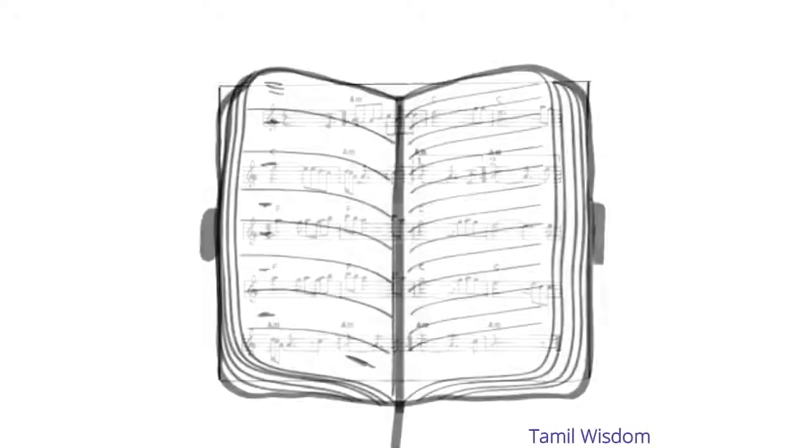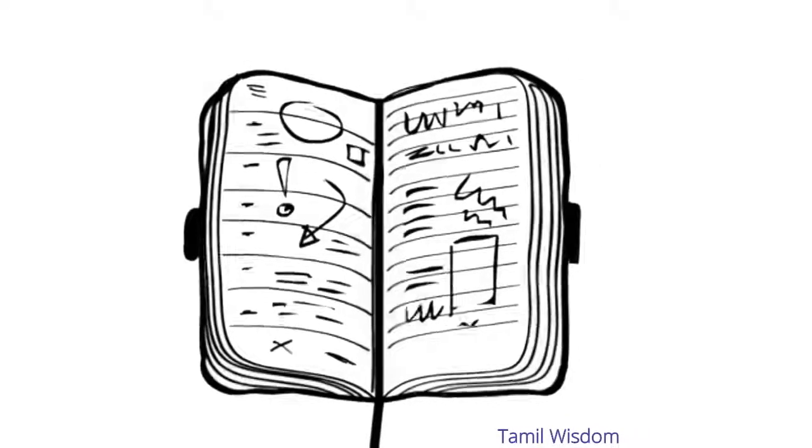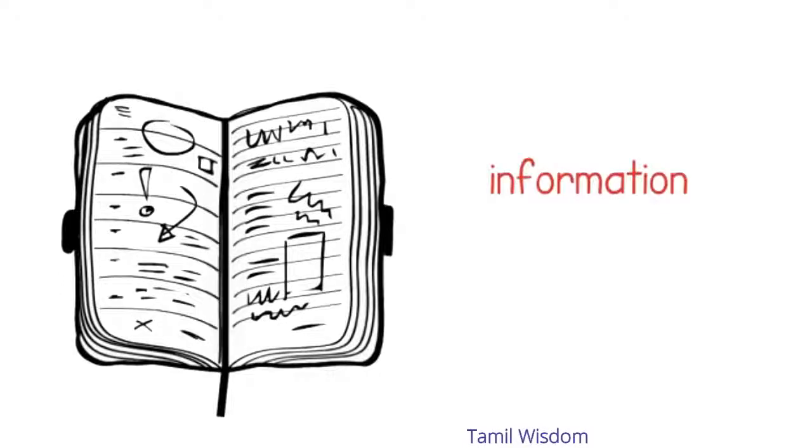Uncountable nouns do not have a plural form. For example, we say information but not informations. Uncountable nouns thus take the singular form of the verb.